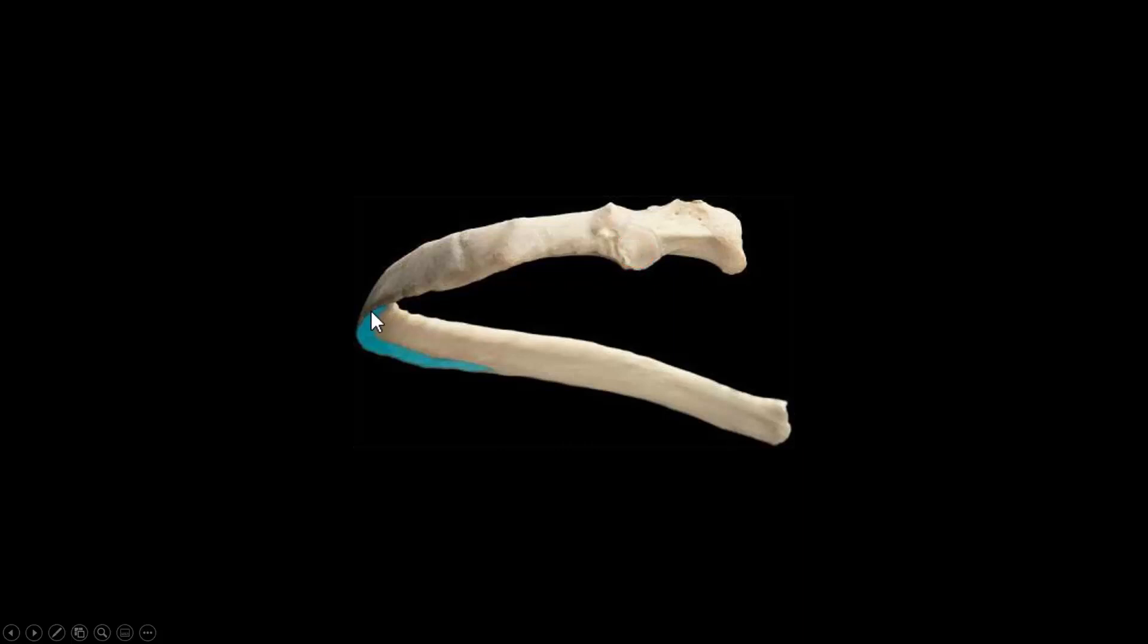And then underneath the rib, which is highlighted in blue here, we see what's called a costal groove. Remember, in the costal groove you're going to find a neurovascular bundle.